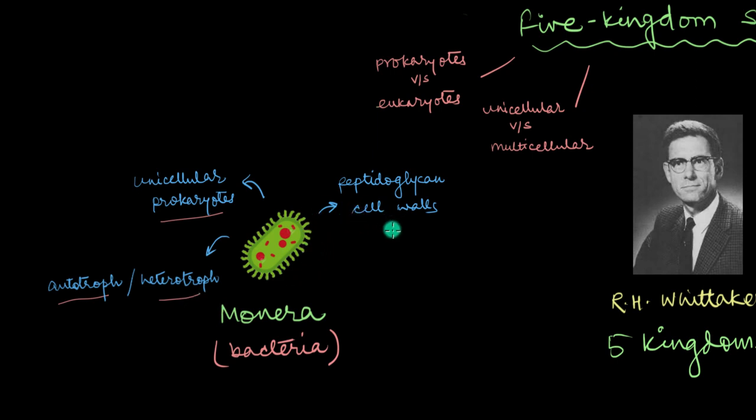But this is where the composition of cell walls comes into the picture as a criterion for classification. You see, unlike plants, bacterial cell walls, they are non-cellulosic. That means their cell walls are not made up of cellulose. Instead, they are made up of these polysaccharide chains called peptidoglycans.